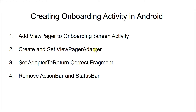On the first page it shows something, on the second something else, and on the third something else. That will be returned by our ViewPager adapter, and we will set the adapter to return the correct fragment according to which page the user is on. Finally, we will remove the action bar and status bar.